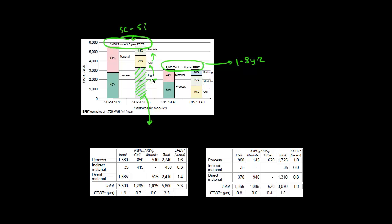Thin film based solar cells do not need this ingot and wafer slicing to start the process flow, so this component is essentially absent, and that is the prime driver of reduction in energy payback time. The ingot itself is responsible for 1.6 years out of the 3.3 year energy payback time. So if we can get rid of that, we can essentially reduce the energy payback time significantly.